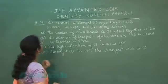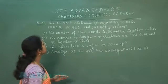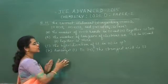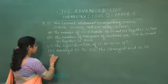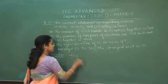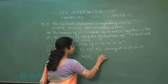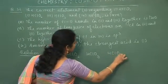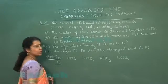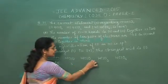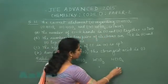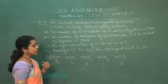Next question is question number 32 — the correct statements regarding HClO, HClO₂, HClO₃, and HClO₄. Four statements are given and we have to find which are correct. Checking lone pairs on chlorine: in HClO, chlorine has 3 lone pairs; in HClO₂, chlorine has 2 lone pairs; in HClO₃, chlorine has 1 lone pair; in HClO₄, chlorine has 0 lone pairs.